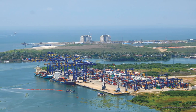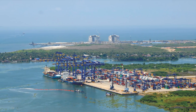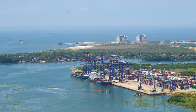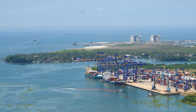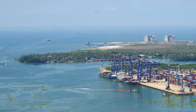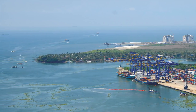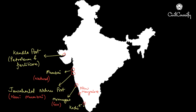Then we have the Kochi port in Kerala. Kochi port is situated at the head of the Vembanad Lake and is popularly known as the Queen of the Arabian Sea. It caters to the needs of Kerala, southern Karnataka and southwestern Tamil Nadu.